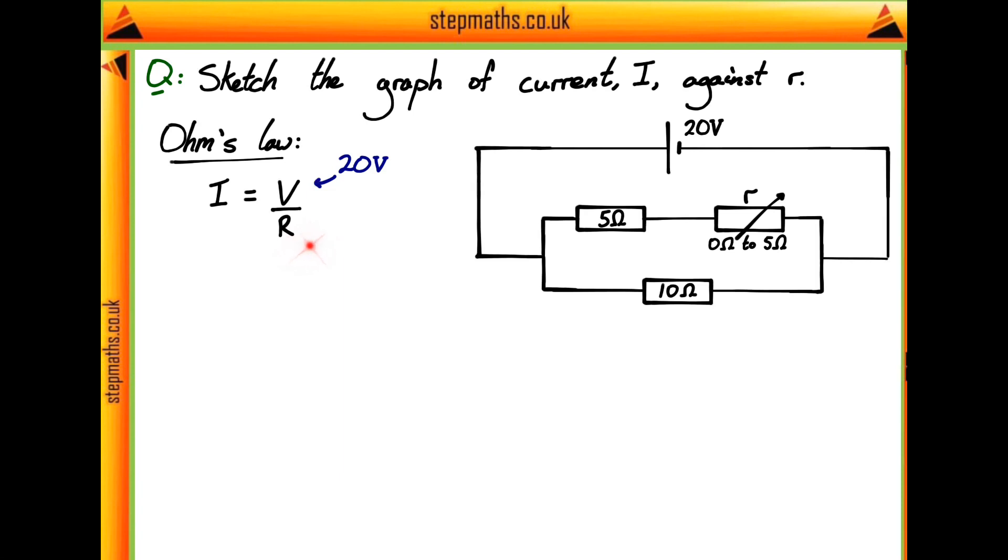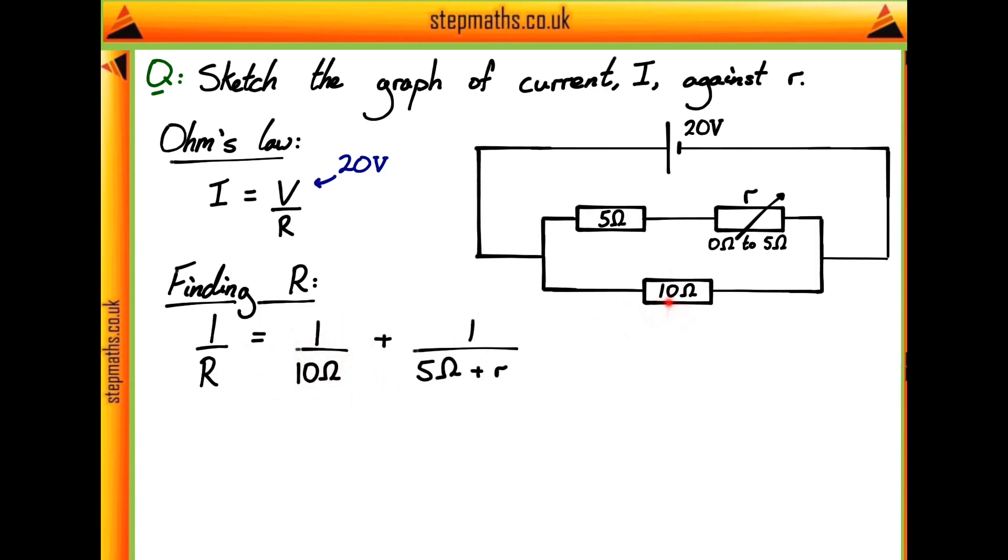So what we have to do is try and find an expression for the total resistance and then we can find an expression for our current. To find our total resistance we need to find the resistance of these two parallel sections, these two parallel systems of resistors. Whenever we have resistors in parallel we have to use the rule of adding the reciprocals of our resistances to get the reciprocal of our total resistance. So 1 over the total resistance is going to be equal to 1 over our 10 ohm resistor given here, plus 1 over the resistance of this branch, 5 ohms plus R ohms.